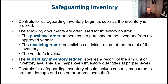Once inventory is received, we create what's called the receiving report, which establishes an initial record of the receipt of inventory. We count exactly what we received and compare the receiving report to the purchase order to make sure the quantity and items match, because the supplier might sometimes send more or fewer items than ordered.